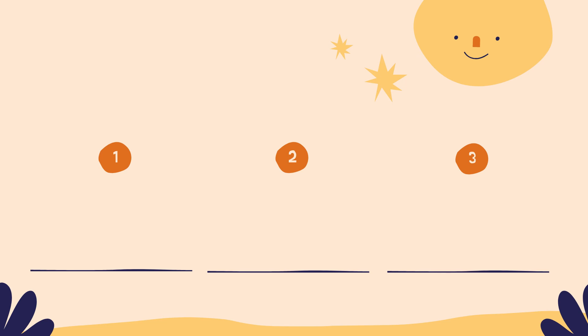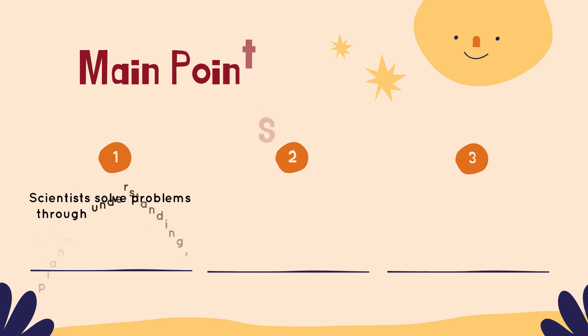Before we finish, let's take a quick look at the main points we covered. We've learned that scientists solve problems by understanding the problem, devising a plan, carrying it out, and then evaluating the results.